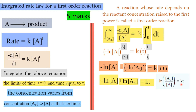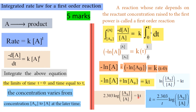Converting to log base 10: k equals 2.303 divided by t, times log (A0 divided by A). We call this the rate constant k. This is a very important 5-mark formula.